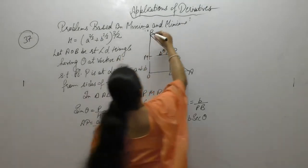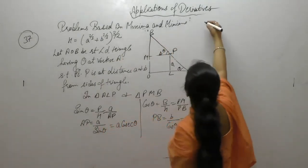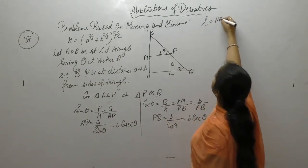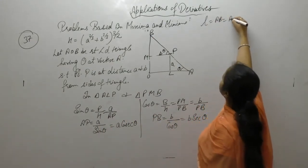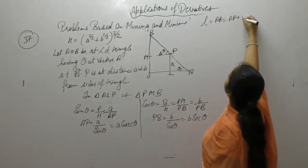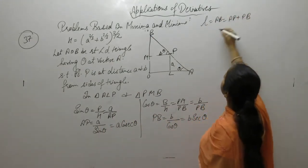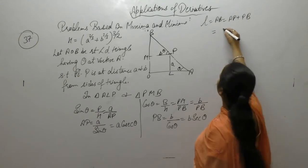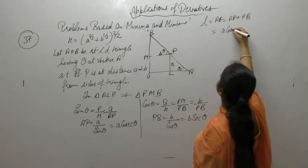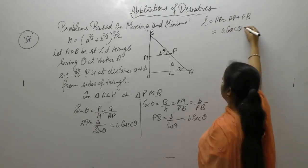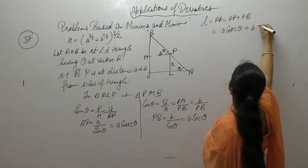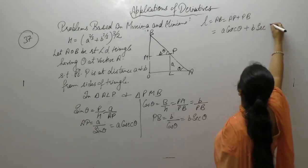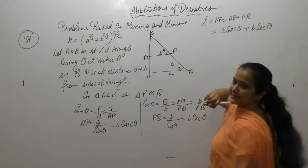Now hypotenuse AB equals AP plus PB. AP has value A cosec theta and PB has value B sec theta.